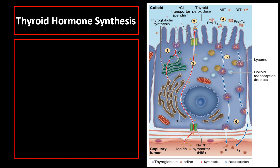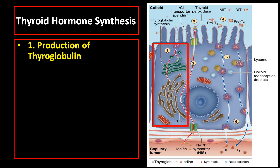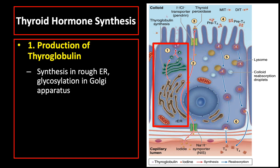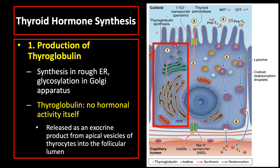The production, storage, and release of thyroid hormones involves an unusual multistage process in the thyrocytes, with both an exocrine phase and an endocrine phase. Both phases are promoted by thyroid-stimulating hormone. The first step is production of thyroglobulin, which is synthesized in the rough endoplasmic reticulum and glycosylated in the Golgi apparatus. Thyroglobulin has no hormonal activity and is released as an exocrine product from apical vesicles of thyrocytes into the follicular lumen.